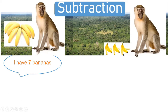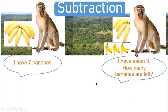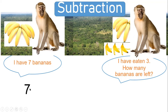Now it has eaten three bananas, so how many bananas does it have left? Assume that it's me — I have seven bananas, I have eaten three. How many bananas are left? We can count: one, two, three, four. Four bananas are left. So we say: at first I have seven bananas, I eat three, so minus three.